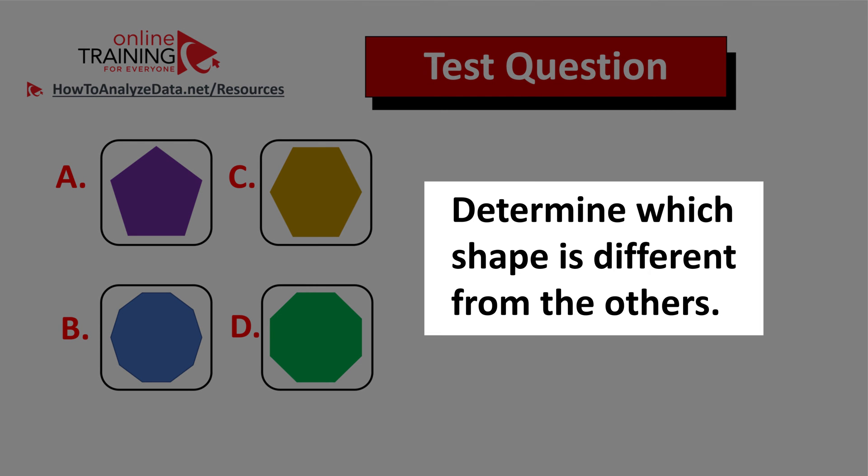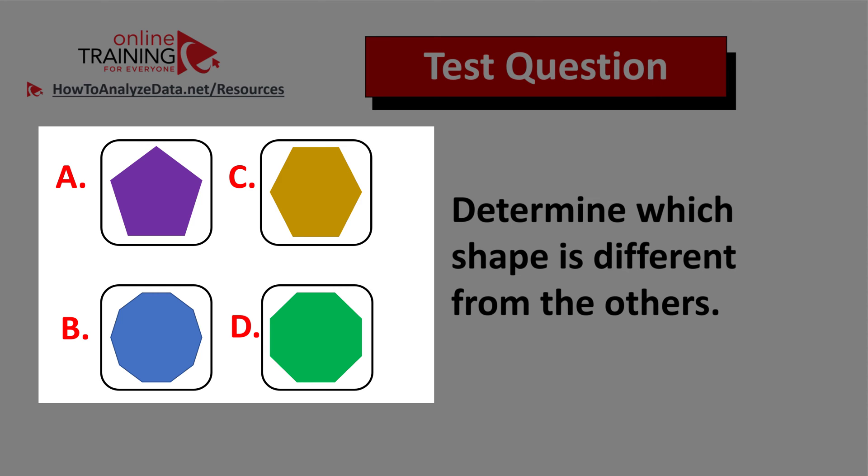Determine which shape is different from the others. You're presented with four different shapes: choices A, B, C, and D.